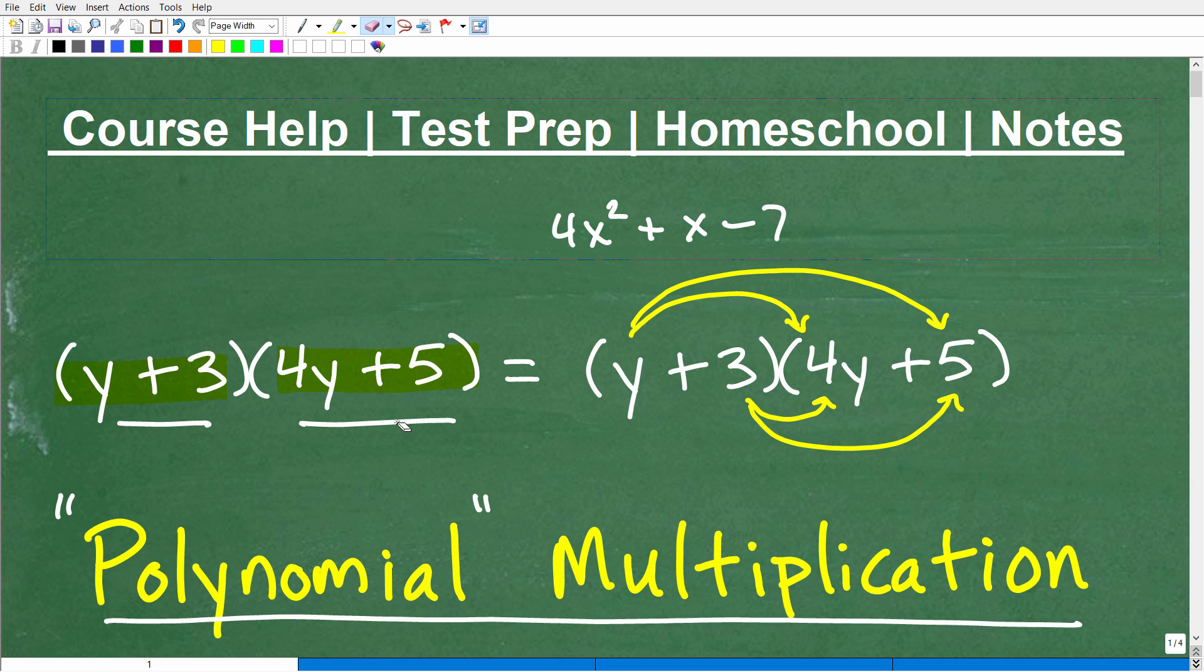So 2x by itself is a polynomial. And these, y plus 3, 4y plus 5, that's a polynomial. This is a polynomial. But when you have a single term polynomial, that's a monomial. These are binomials, and you can have trinomials. But again, all of this falls under the category of a polynomial multiplication.